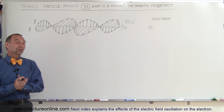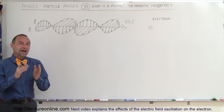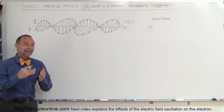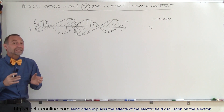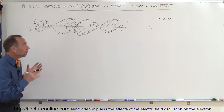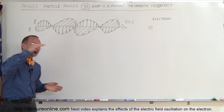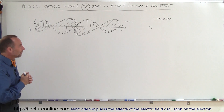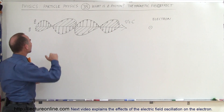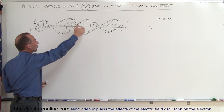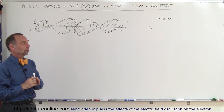Welcome to ElectronLine. In order to understand the photon better, let's now take a look at the oscillating magnetic field and electric field inside the photon. Let's start with the magnetic field effect of a photon. Imagine a photon is flying through space at the speed of light — V is equal to the speed of light — and it will have electric field oscillations and magnetic field oscillations which are perpendicular to each other.